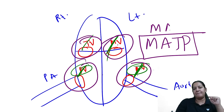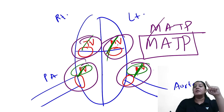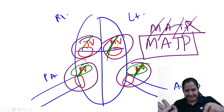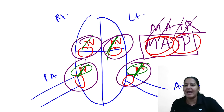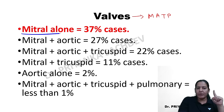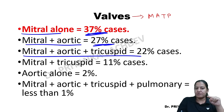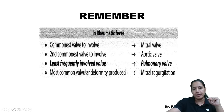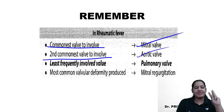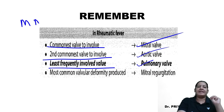The mnemonic for valve involvement sequence is MATP — M (mitral) most common, A (aortic) second, T (tricuspid) third, P (pulmonary) least common. Mitral alone is involved in most cases; pulmonary is involved in less than 1% of cases. The most common valve deformity due to vegetations on the mitral valve is mitral regurgitation (MR), which is more common than mitral stenosis (MS).